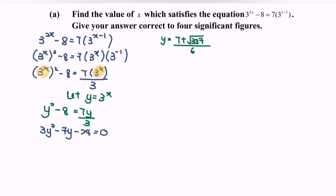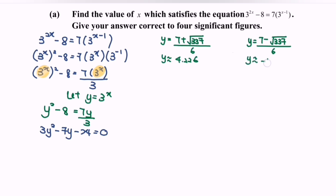Next, y is equal to 7 minus square root of 337 over 6. So basically, the value of y is approximately 4.226, whereas the other value of y is approximately negative 1.893. Do remember, we already let y equal to 3 to the power of x.